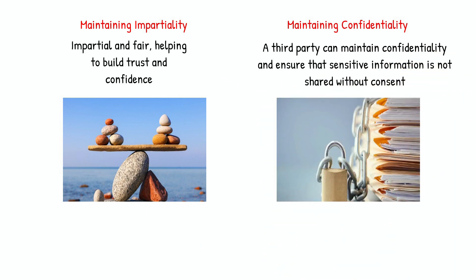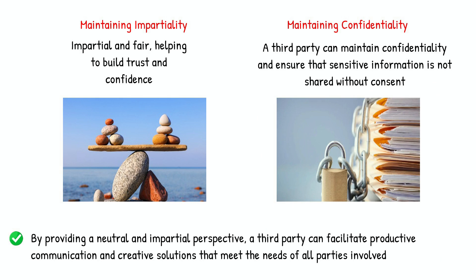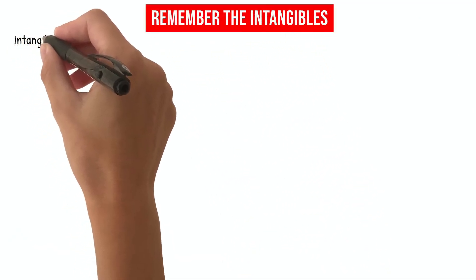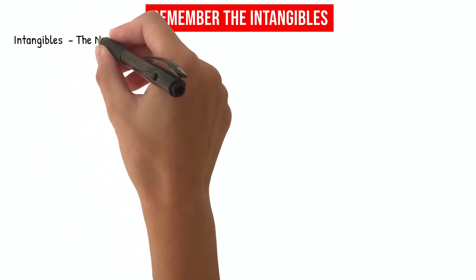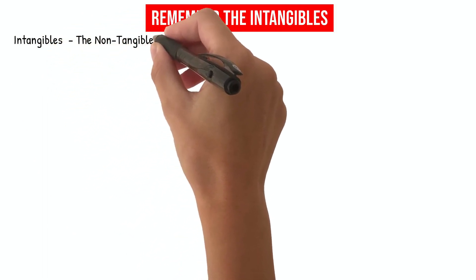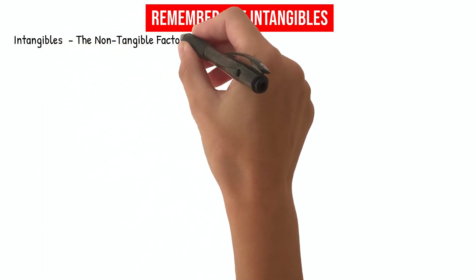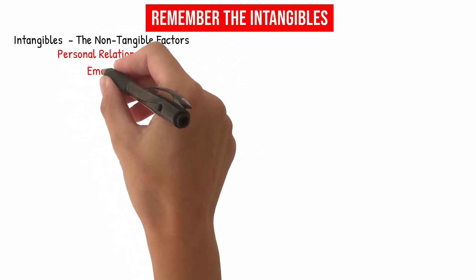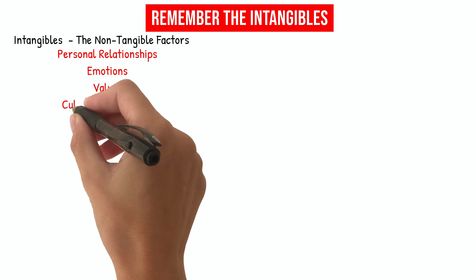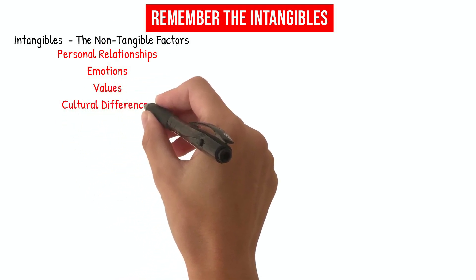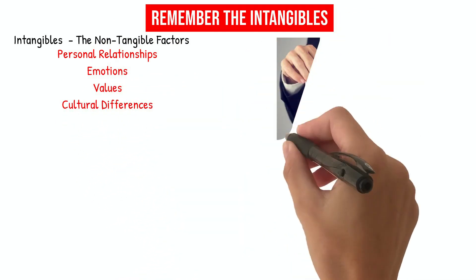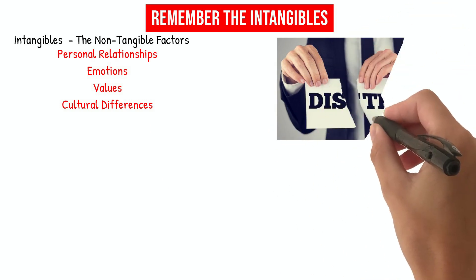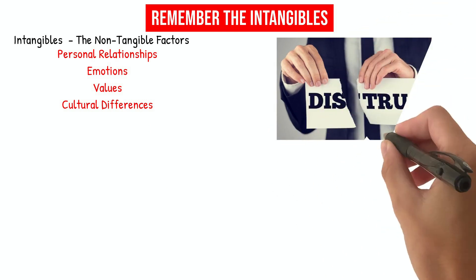Maintaining Confidentiality: a third party can maintain confidentiality and ensure that sensitive information is not shared without consent, helping to build trust and encourage open communication. Remember the Intangibles. In negotiations, it is essential to remember the intangibles — the non-tangible factors that can impact the negotiation outcome. These intangibles include personal relationships, emotions, values, and cultural differences. Failing to consider these intangibles can lead to misunderstandings, mistrust, and ultimately a breakdown in negotiations.